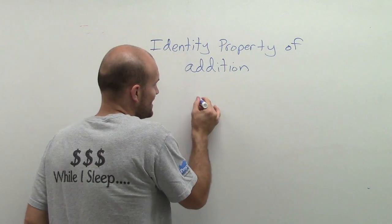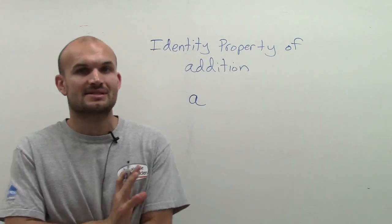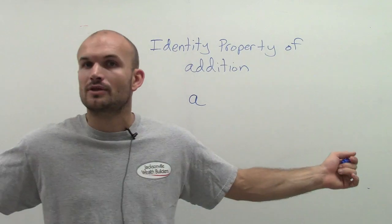Well, let's take an identity of A. And A, we're going to say, could represent any real number. And we've talked about real numbers. There's infinitely many real numbers, right?